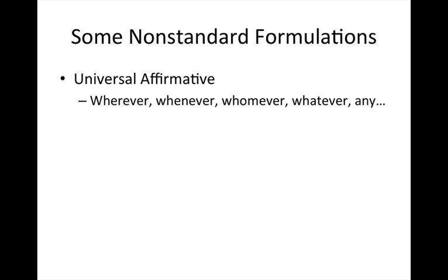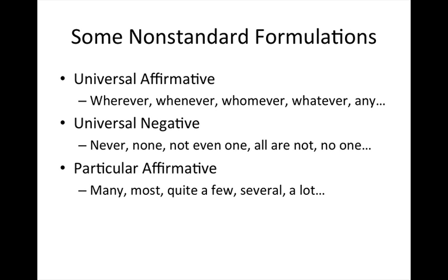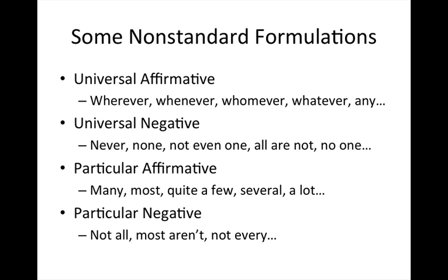Let's look at some other non-standard formulations. Universal affirmatives include ordinary language expressions such as: wherever, whenever, whomever, whatever, any, and so forth. Universal negatives include expressions like: never, none, not even one, all are not, no one, etc. Particular affirmatives include expressions like: many, most, quite a few, several, a lot, and so forth. Lastly, particular negative claims involve formulations such as: not all, most aren't, not every. If you can identify these and similar expressions, you'll be able to identify both the quantity and quality of any sentence that is either true or false.